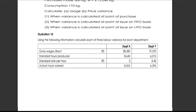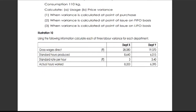Illustration number 10: Using the following information, calculate each of the three labor variances for each department — Department X and Department Y. For Department X, gross wages direct is 28,080 rupees, standard hours produced is 8,640, standard rate per hour is 3 rupees, and actual hours worked is 8,200. For Department Y, gross wages direct is 19,370, standard hours produced is 6,115, standard rate per hour is 3.45 rupees, and actual hours worked is 6,395.